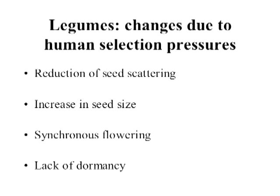Like the grains, legumes were also subject to human selection pressures. Humans have selected for reduction of seed scattering to make harvesting easier, for increase in seed size — the bigger the seeds, the more food and nutrition per seed — for synchronous flowering so all plants flower at the same time, making harvest much easier. And they've selected for lack of dormancy: in the wild, some seeds stay dormant in soil, but humans want seeds that all germinate right away when planted.